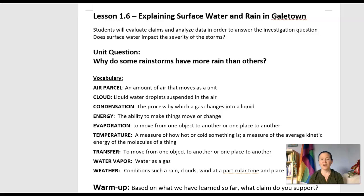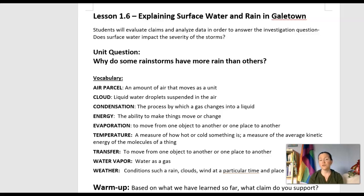Lesson 1.6: explaining surface water and rain in Galetown. Our goal today is to look at some claims about what is causing the severe weather in Galetown, analyze some data, and try to answer the investigation question: does surface water impact the severity of the storms? We're going to look at the data and then write claim evidence reasoning at the end of our lesson to help explain our thinking.